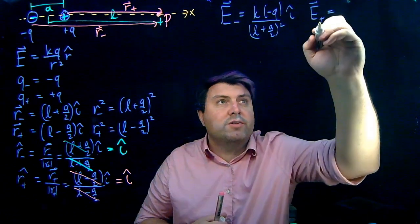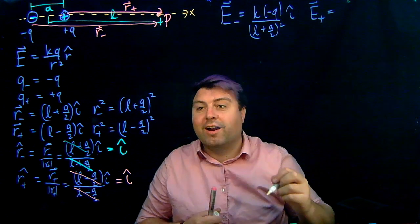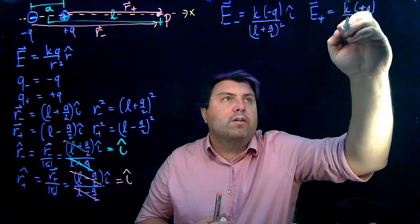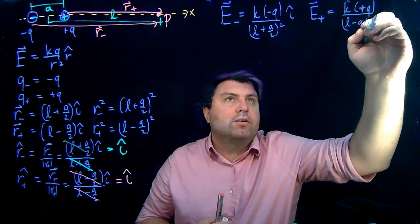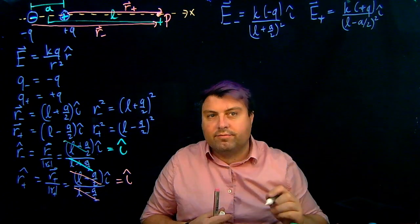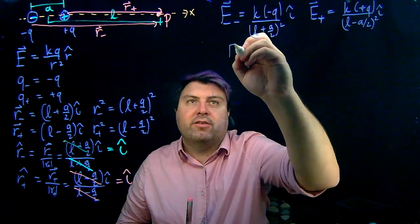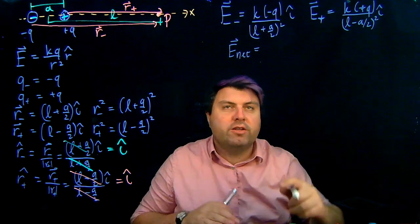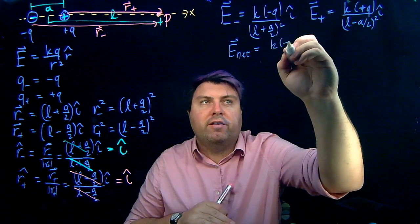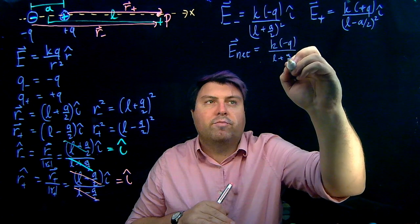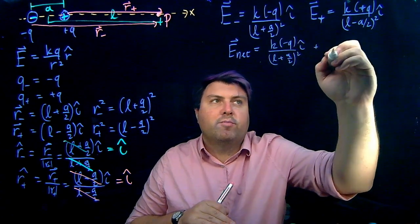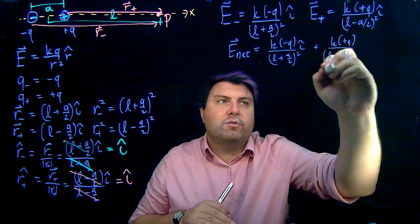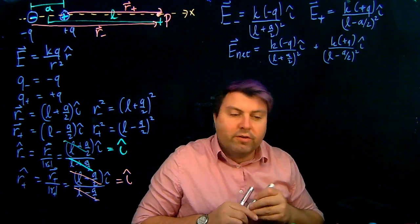And then what's really nice is that our net electric field, because we've written it in this way, we can just add them as vectors. So now I have K minus Q over L plus A over 2 quantity squared I hat, plus K plus Q over L minus A over 2 quantity squared I hat.